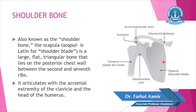It articulates with the acromial extremity of the clavicle and the head of the humerus. So it articulates with these two bones: clavicle and humerus.